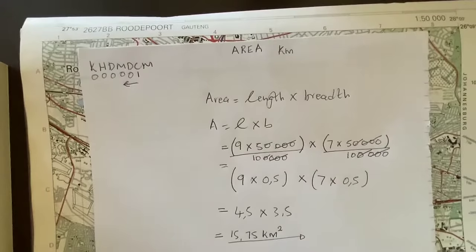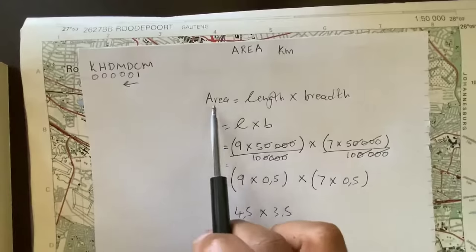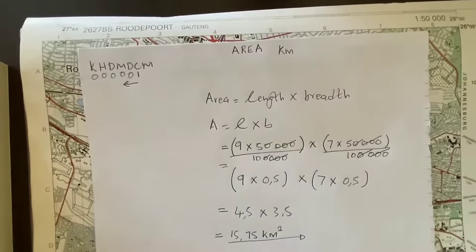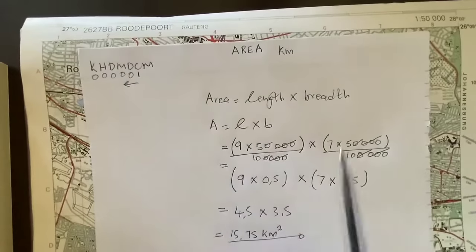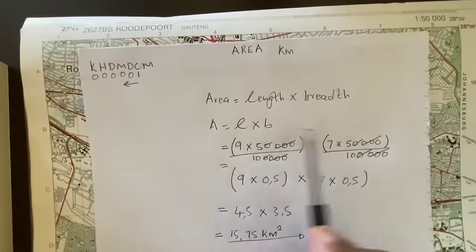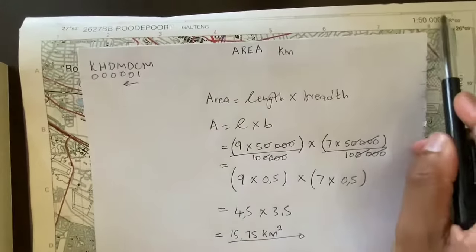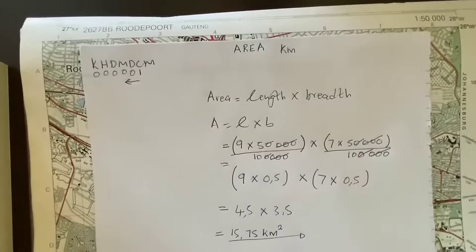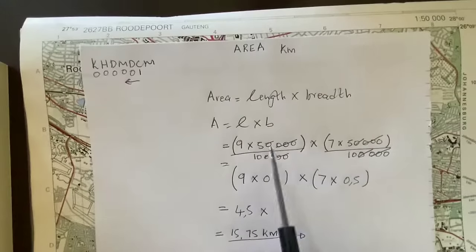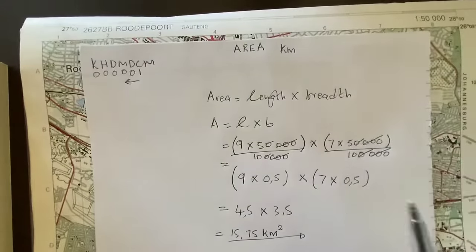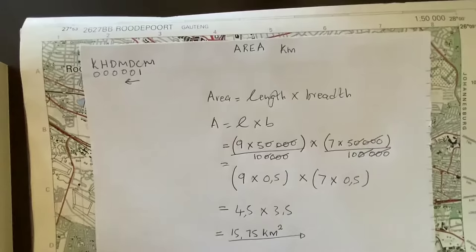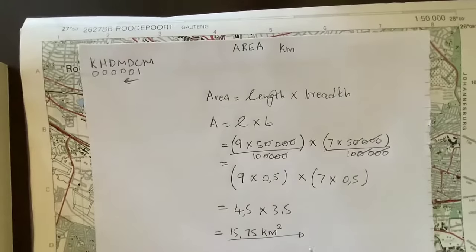To recap: when you calculate area, use the formula area equals length times breadth. In this case our length was nine centimeters and our breadth was seven centimeters. We multiply both by the scale to convert from centimeters to kilometers. After converting, for a scale of 1:50,000, each measurement becomes 0.5 kilometers, giving us a final answer of 15.75 square kilometers.